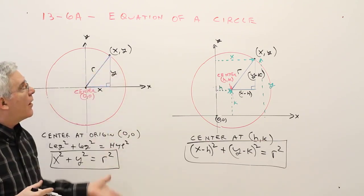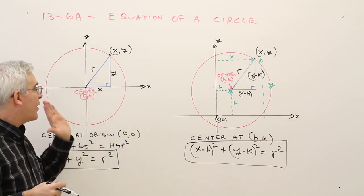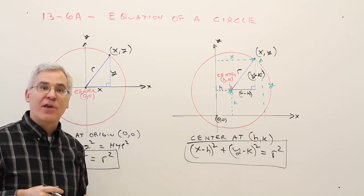So there you have it. How to derive the equation of a circle with center at the origin, or center at h comma k.